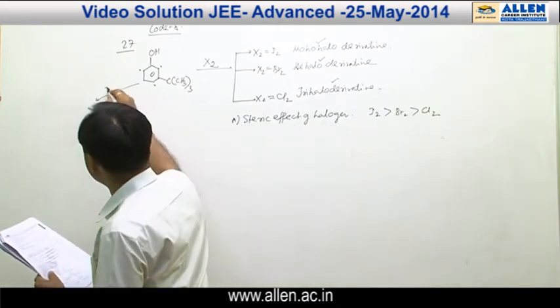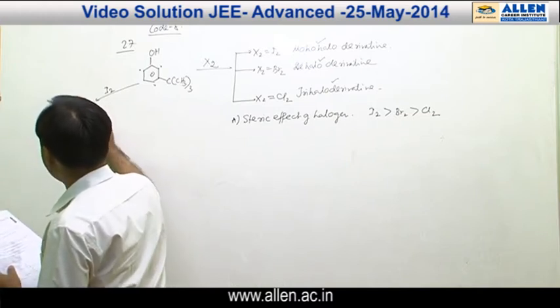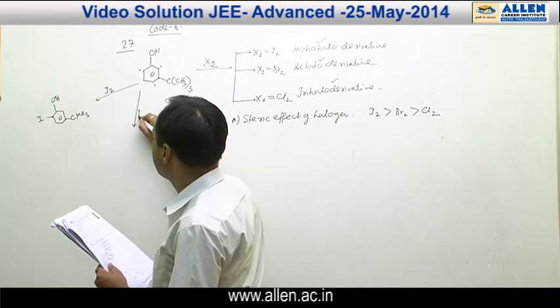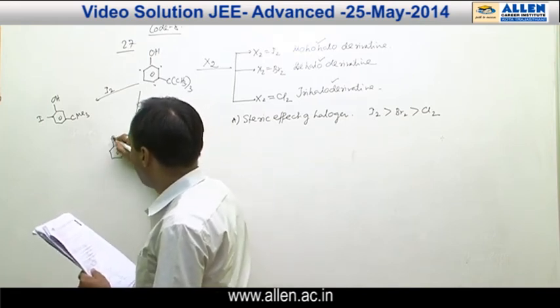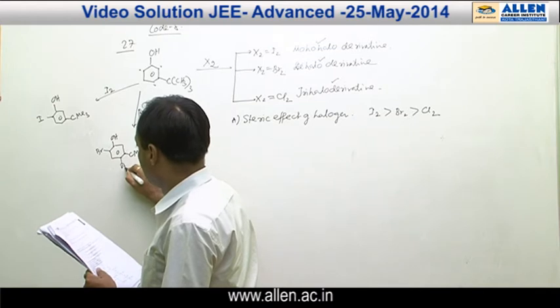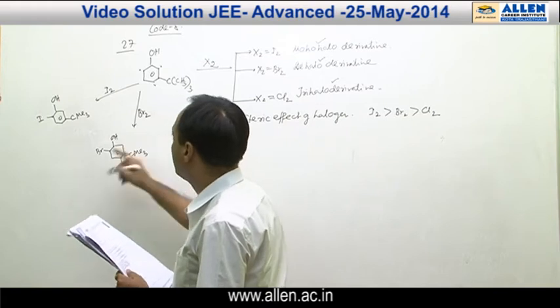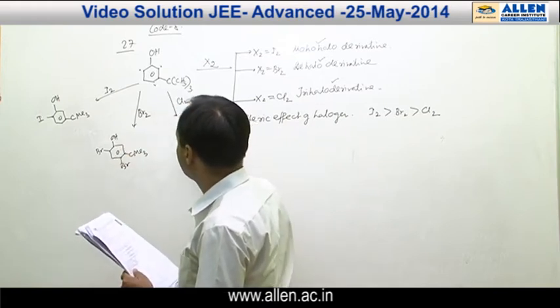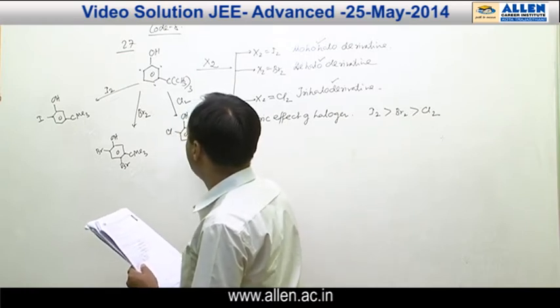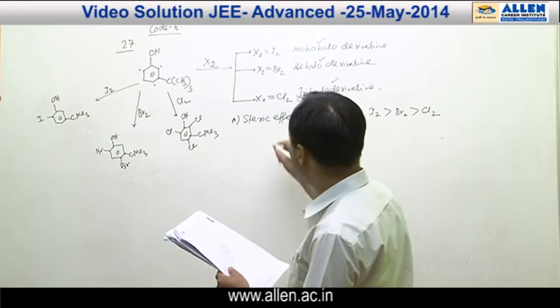For example, if it is reacting with I2, the product is OHC-CH3 and I will be attached at ortho with respect to OH. For example, when it reacts with bromine, the product is OHC-CH3 and two Br will be attached with respect to ortho and para with respect to OH. So steric effect is correct.